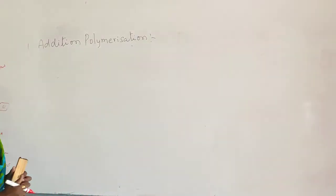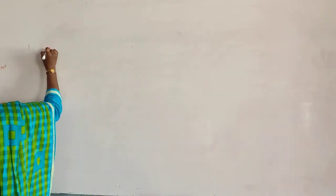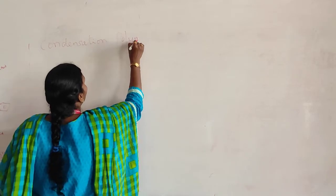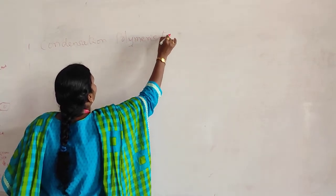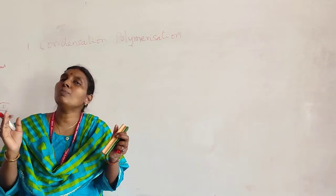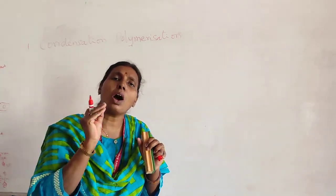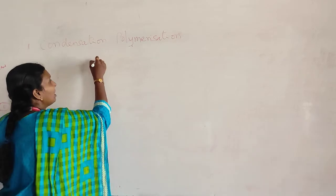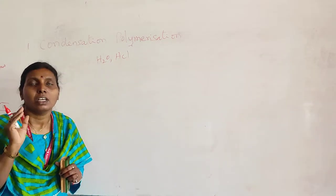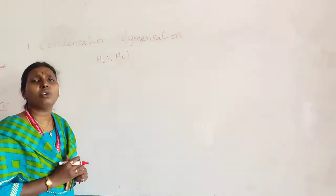The second type is condensation polymerization. In condensation polymerization, the small monomer units combine, but with the loss of small molecules like water, HCl, and so on. Loss of these smaller units takes place, and that process is known as condensation polymerization.